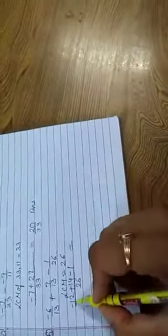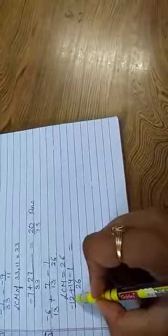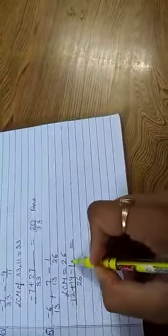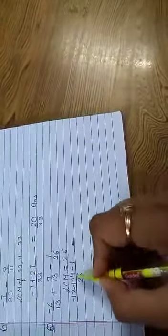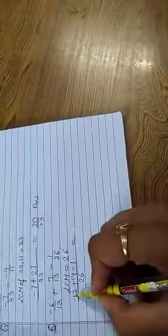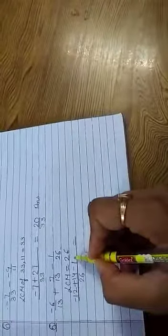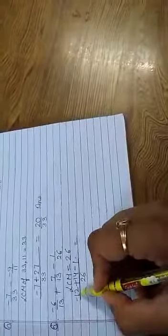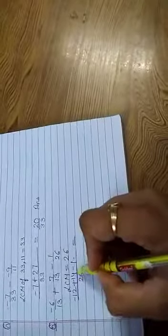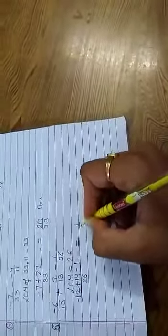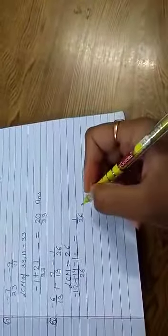Now either you solve first negative sign then positive sign or you can do 14 minus 12 minus 1. 14 minus 12 is 2 and 2 minus 1 will be 1, or minus 12 plus 14 is 2 and 2 minus 1 is 1. So our answer will be 1 upon 26.